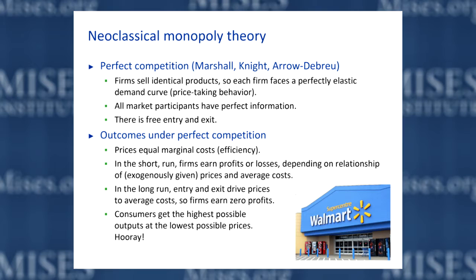If you look at this in a picture — which you can see on the next slide — this is a version of the picture we looked at last time. You've got that perfectly elastic or horizontal demand curve, which also corresponds to the firm's marginal revenue. All firms are producing where that horizontal demand curve — the market price — intersects the marginal cost curve. And in the long run, prices will be driven to the point where that demand curve just hits the bottom of the U-shaped average cost curve. So all identical firms earn zero economic profits, producing where price equals marginal cost and where price equals average cost.